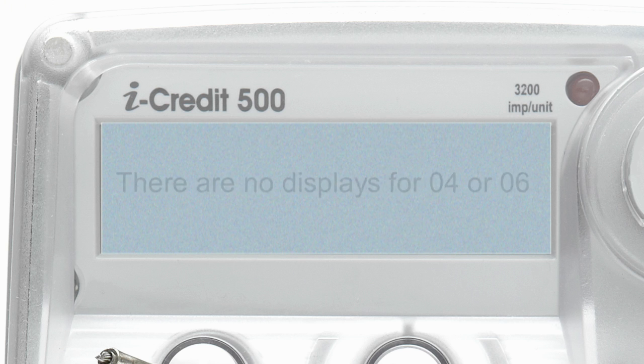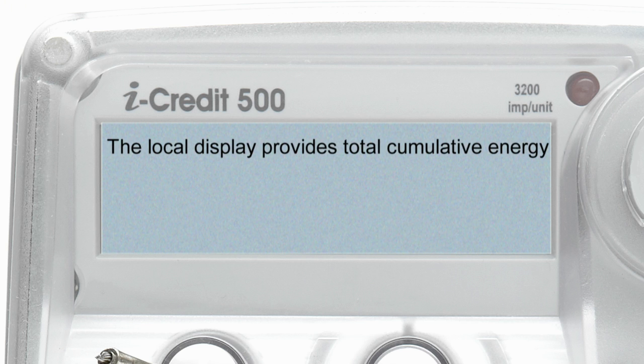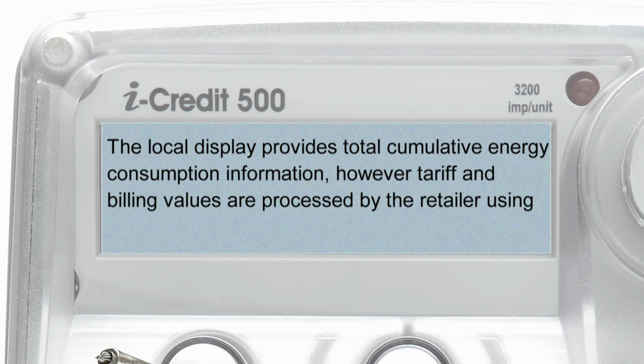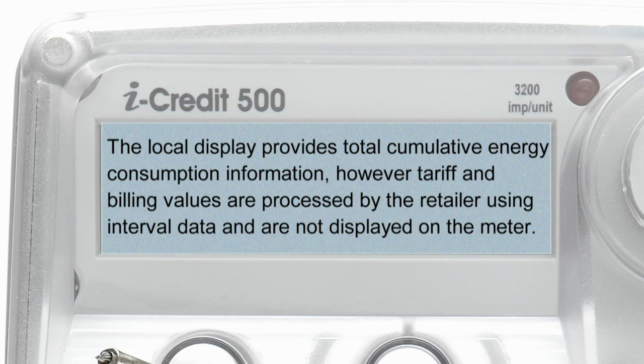The local display provides total cumulative energy consumption information. However, tariff and billing values are processed by the retailer using interval data and are not displayed on the meter.